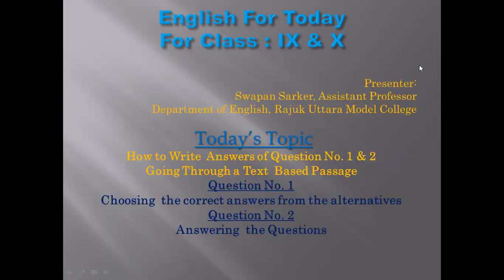I am going to discuss a topic from English for Today for Class 9 and 10 — how to write answers to question numbers one and two, going through a text-based basis. Question number one is about choosing the correct answers from the alternatives, and question number two is answering the questions.